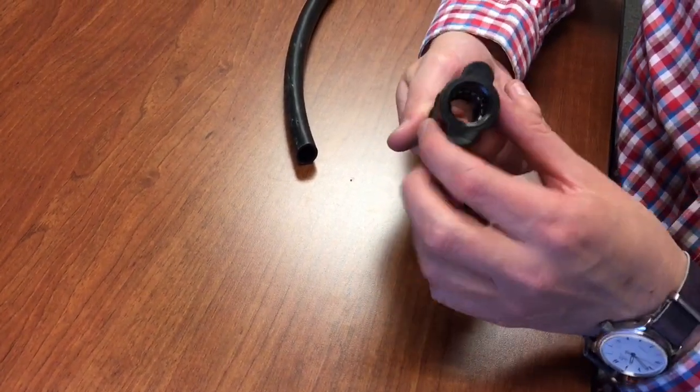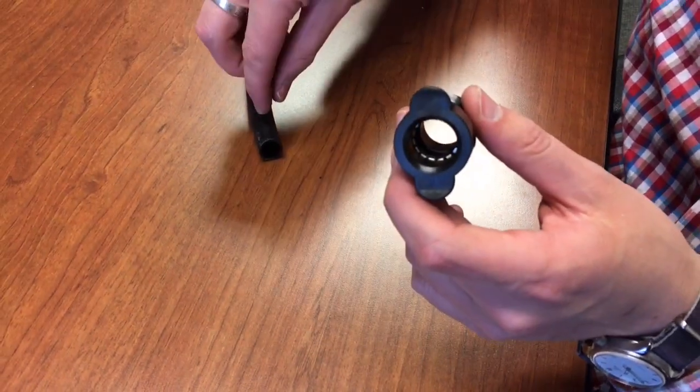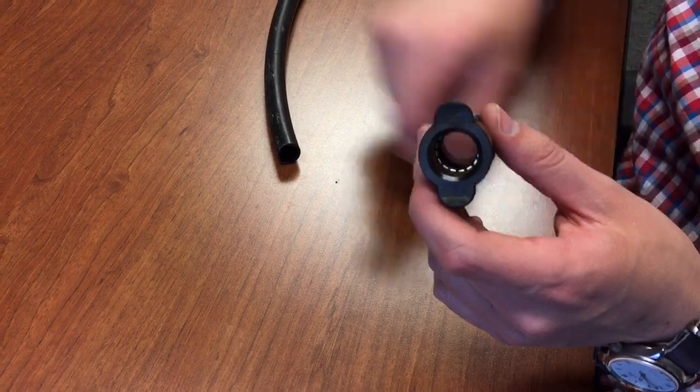I've got a fitting here that's drip lock. You'll see that it's got these stainless steel teeth in there, and that's what grips and grabs, holds onto the drip pipe, the distribution pipe.